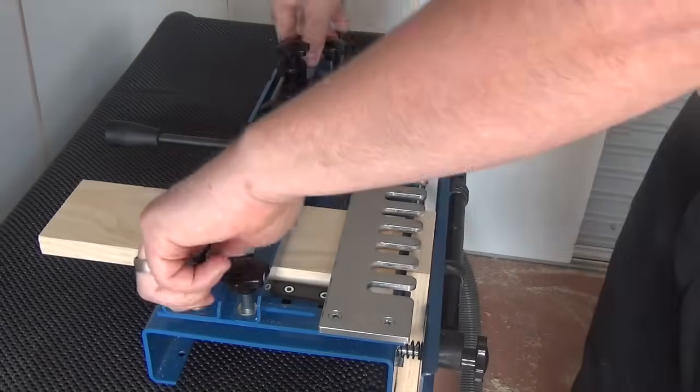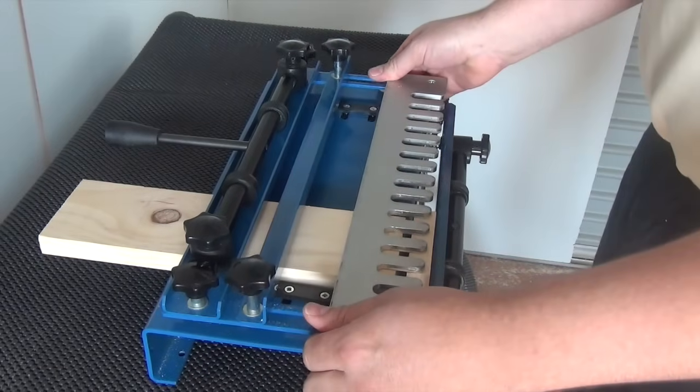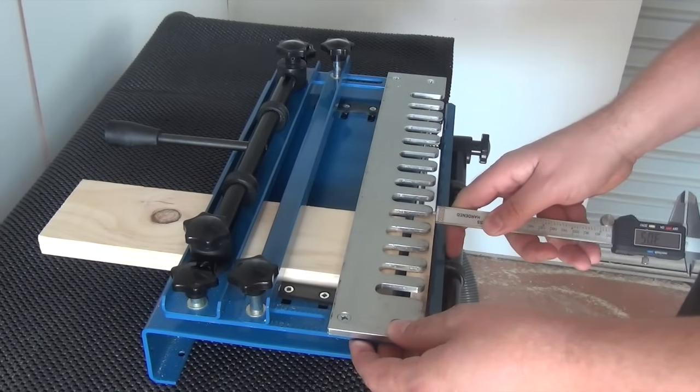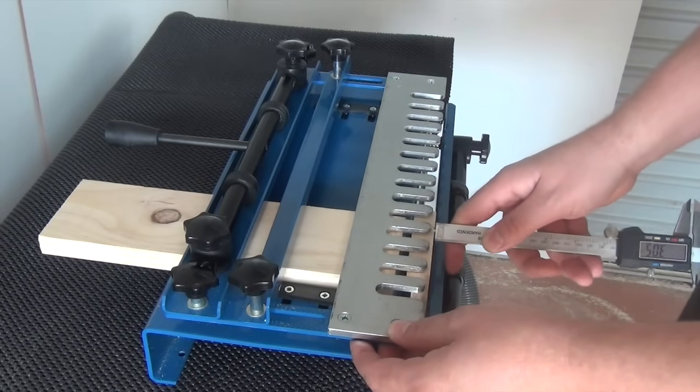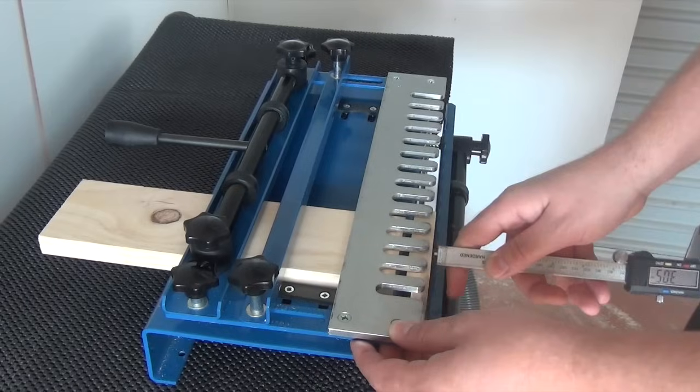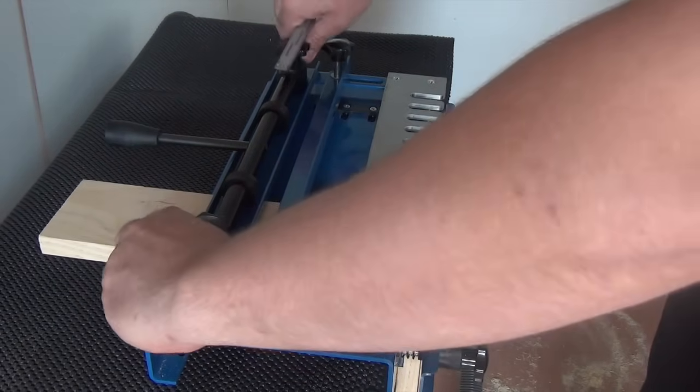Next you need to adjust the depth of the comb over the vertical workpiece. The comb is held in place by the outside knobs at the back of the jig. Loosen these and slide the comb forward until it sits approximately 3mm back from the front of the workpiece. Here we are using a vernier gauge set to 3mm and checking each finger to make sure it is the same distance back. Tighten the rear outside knobs again to lock the comb into position.